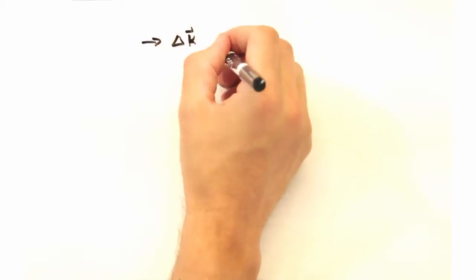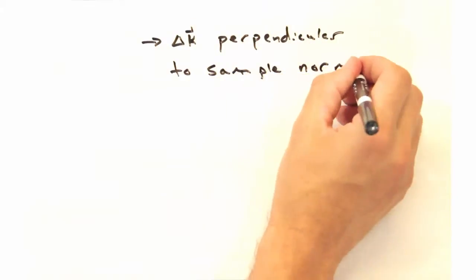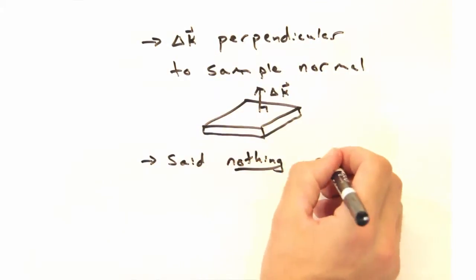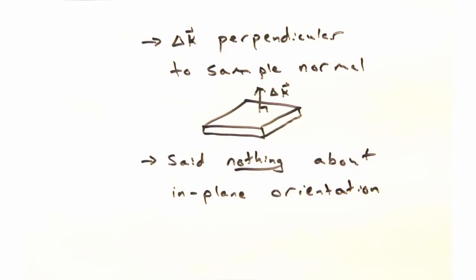But if delta k is perpendicular to the sample normal, which so far it has been, this type of scan won't tell us anything about the in-plane orientation. But luckily, we'll cover that technique in the next video.